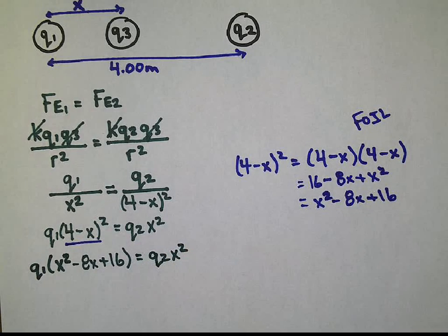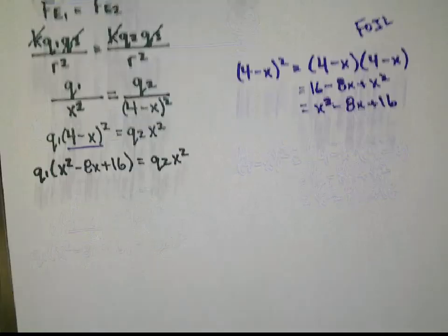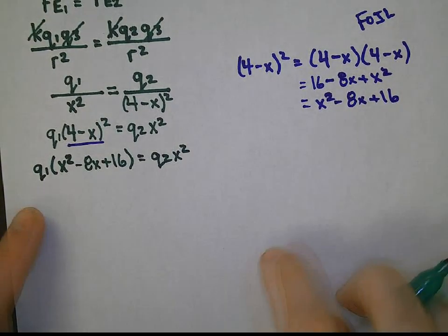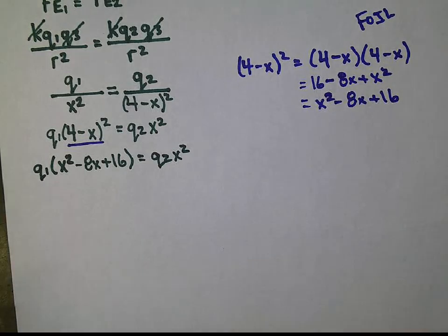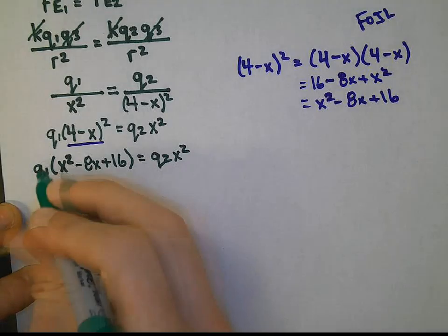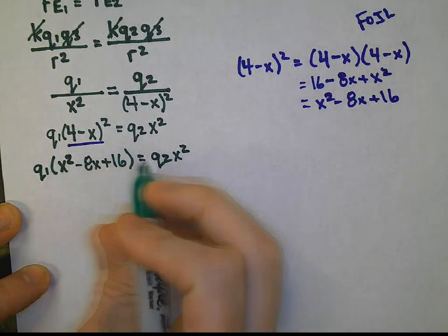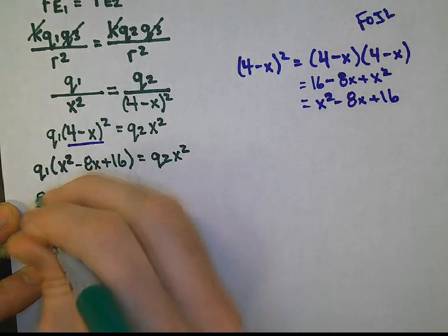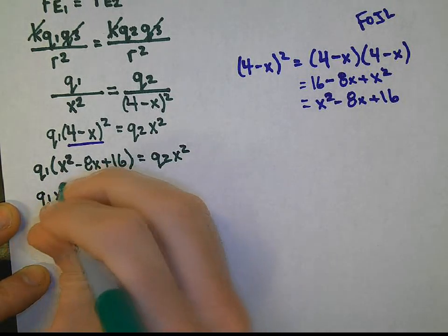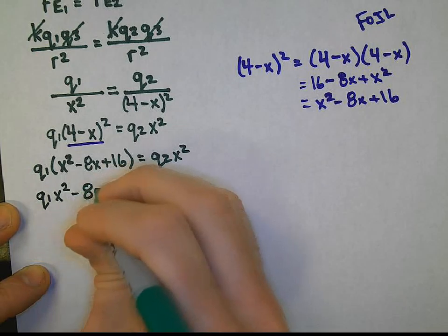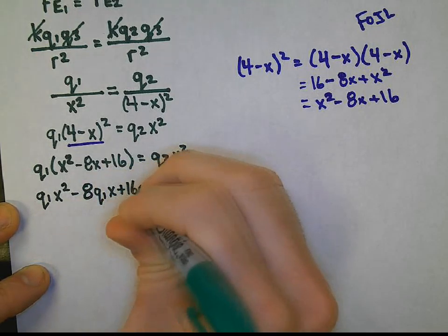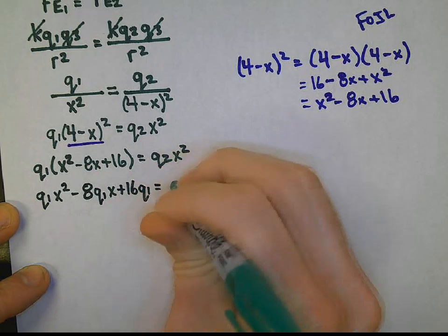And this is where we got to make sure we're really careful with what we do algebraically. I'm not making any substitutions yet on purpose. Multiply Q1 through the brackets with each term inside. So Q1 x squared minus 8q1 x plus 16q1 will be equal to Q2 x squared.